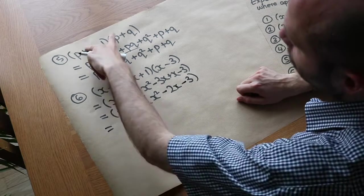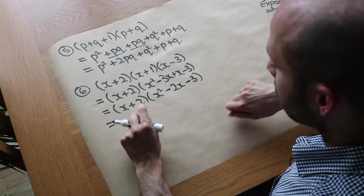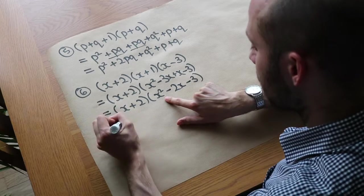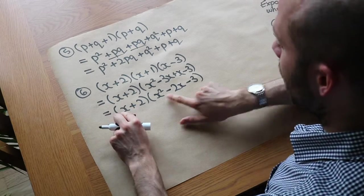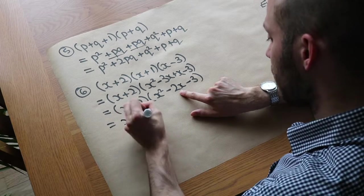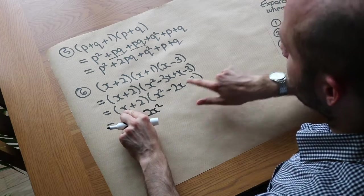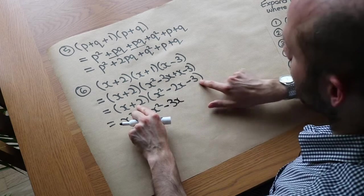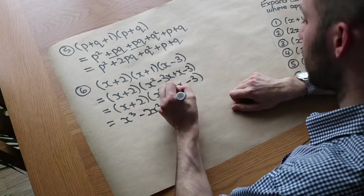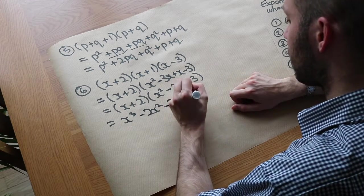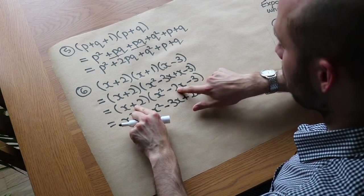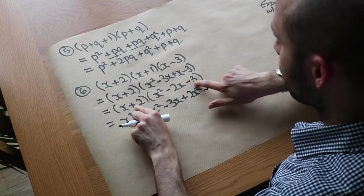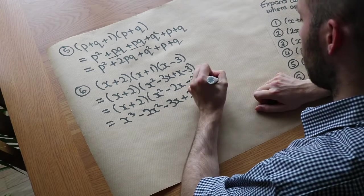So let's expand (x + 2)(x squared minus 2x minus 3). x times x squared is x cubed. x times minus 2x is minus 2x squared. x times minus 3 is minus 3x. Now 2 times x squared is plus 2x squared. 2 times minus 2x is minus 4x. And 2 times minus 3 is minus 6.